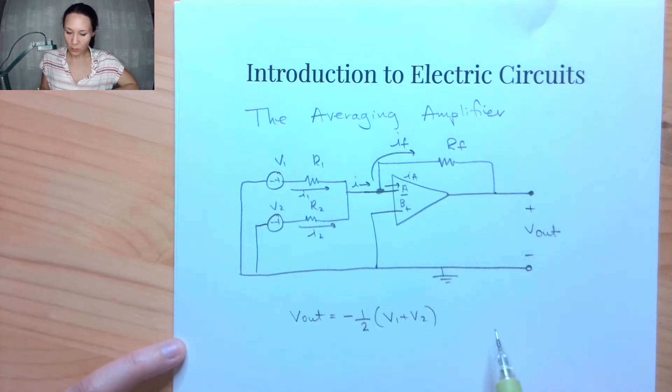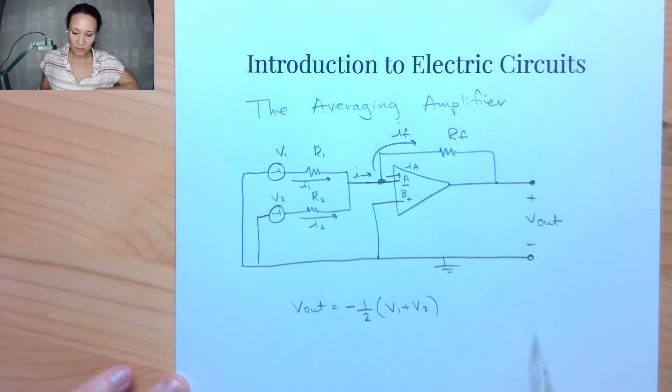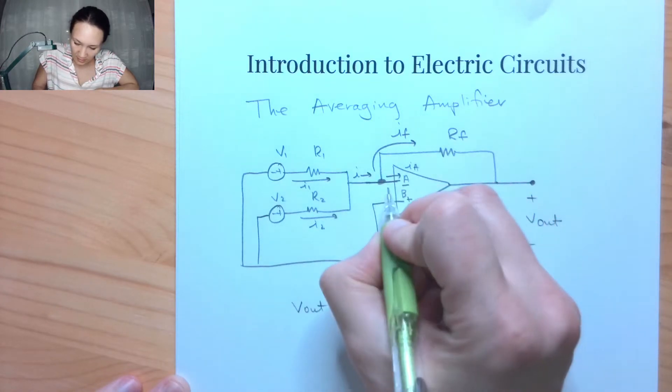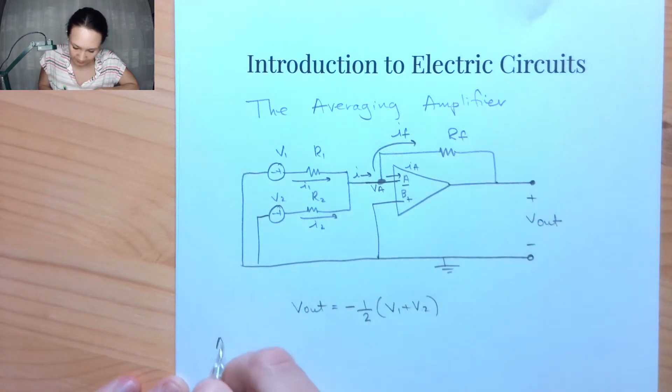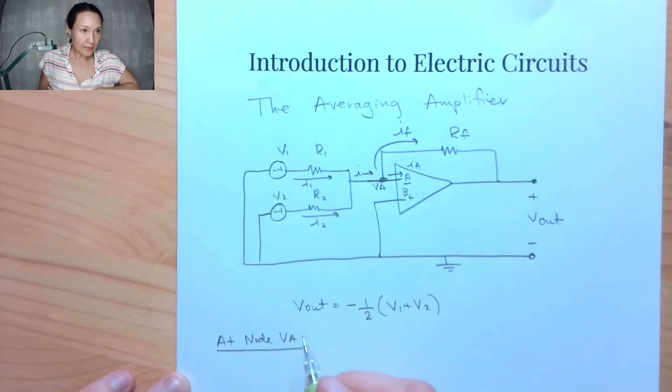So suppose, for example, this is what we want to design. We're going to do circuit analysis on this circuit, just like we did with the other circuits. So if I start here, if I label this node VA, then doing nodal analysis at node VA, my KCL equation is the sum of the currents coming into the node.